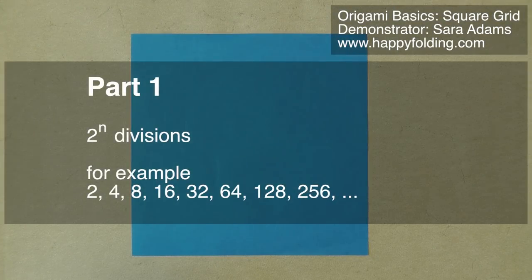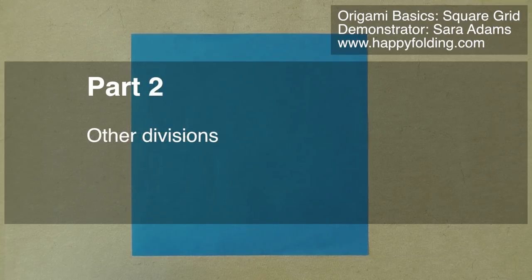First, I'll show how to fold grids that have divisions that are a power of 2. So 2, 4, 8, 16, 32, 64 and so on. These power of 2 divisions are the easiest to fold and the most commonly needed too. In the end, I'll add some notes for other divisions.